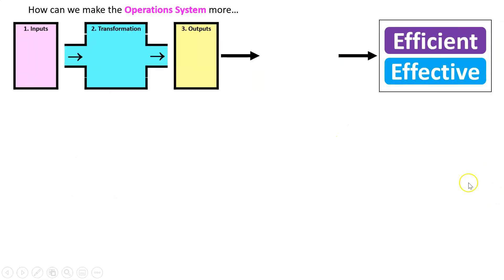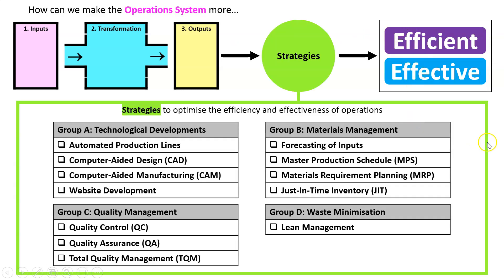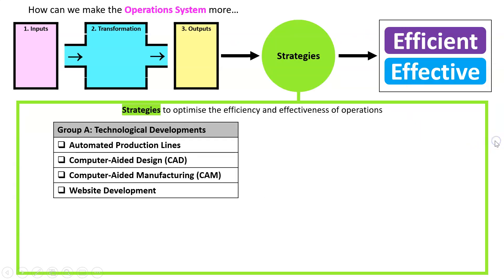We've got an operations system and we need to make it more efficient and effective. There are a bunch of strategies in our course, and in this group we're looking at technological developments. We've got automated production lines, computer-aided design, computer-aided manufacturing, and website development.